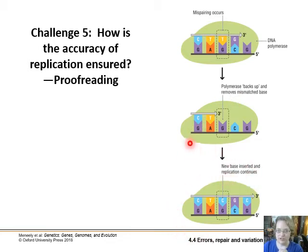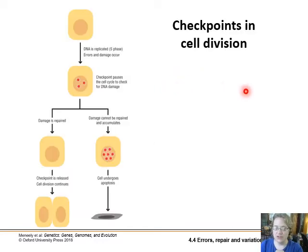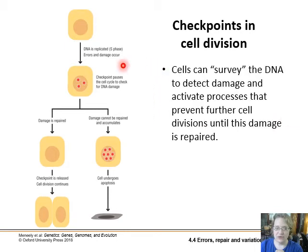It doesn't back-step very far — maybe only one or two bases — but it can proofread, double-check, and excise the incorrect base, then move forward with the rest of replication. Cell division has a check-and-balance system where if too many mutations accumulate, the cell will actually die.